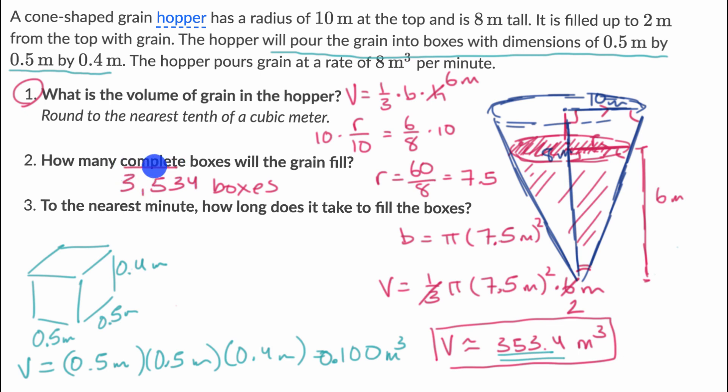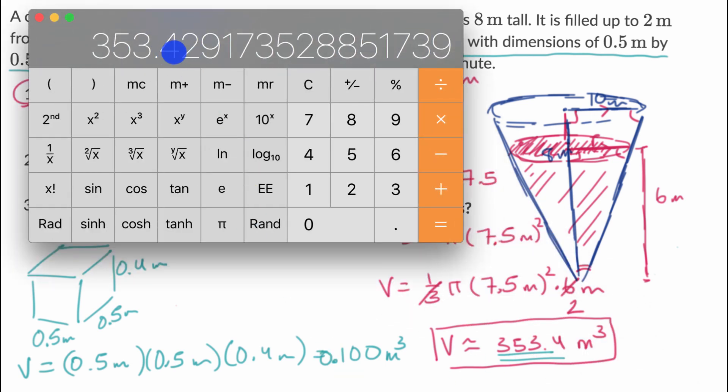And it's important to realize complete boxes, because when we got to 353.4, we did round down. So we do have that amount, but we're not going to fill up another box with whatever this rounding error that we rounded down from.